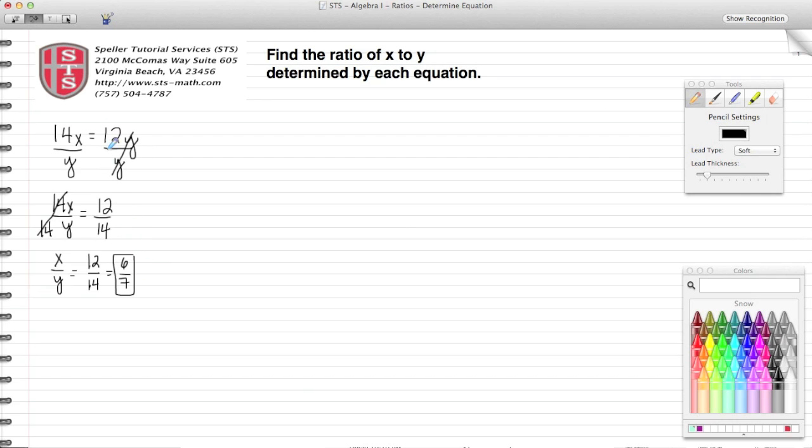So the ratio of x to y would be 6 to 7 with the given equation that we started with. So that here was the first problem.